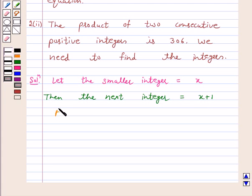According to the question, x times x plus 1 equals 306. That is, the product of two consecutive integers is 306.